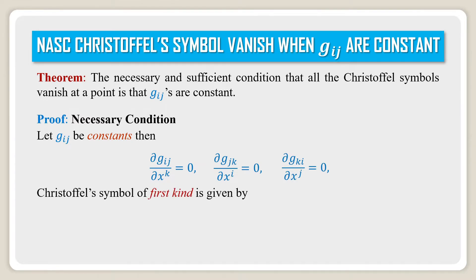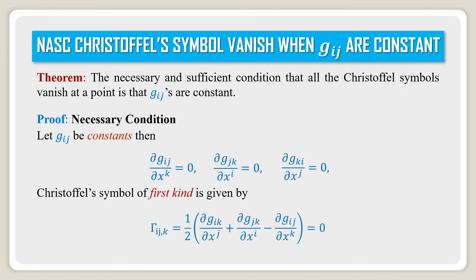The Christoffel symbol of the first kind is given by Γij,k = (1/2)(∂Gik/∂Xj + ∂Gjk/∂Xi − ∂Gij/∂Xk). Since all these partial derivative values are 0, the Christoffel symbol of the first kind is equal to 0.